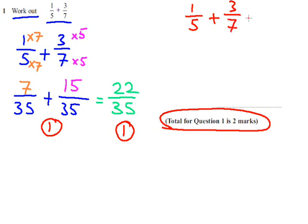Now you may be tempted. A lot of people do this, and just add the numbers. So 1 add 3 is 4, 5 add 7 is 12. That's incorrect. That's when you're multiplying fractions.